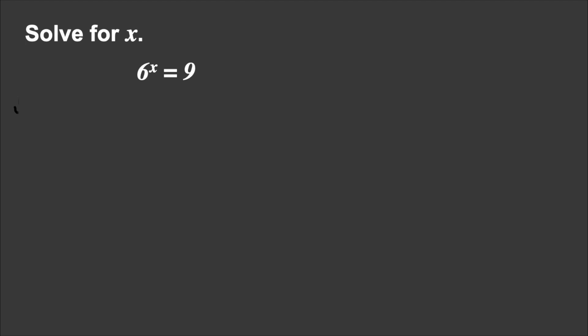Let's solve for x in the expression 6^x = 9. This is Method 2 since it is a one-sided exponential equation. First, using the definition of logarithms: if b^x = y, then log base b of y equals x. So the base 6 becomes the base of the log, x is transposed to the other side, and 9 becomes the argument, giving log base 6 of 9 equals x.